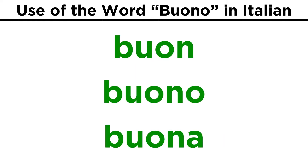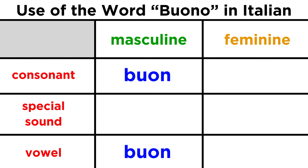You'll notice that sometimes we drop the O, and sometimes we don't, and sometimes we replace the O with an A. This is because buono, in the singular, if masculine, follows the same endings as the indefinite article uno. So it drops the O in front of a consonant or vowel, but it keeps it in front of a special sound.